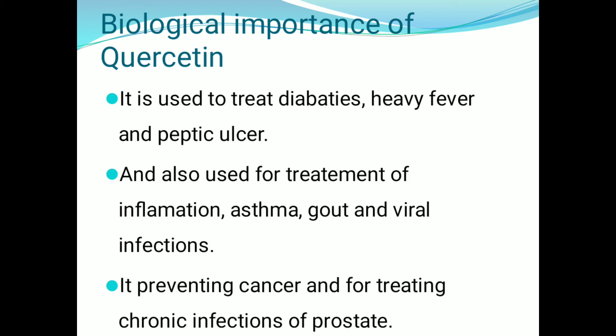Biological importance of quercetin: Quercetin is used for the treatment of diabetes (sugar), heavy fever, and peptic ulcer, and also for treatment of inflammation, asthma, gout, and viral infections.